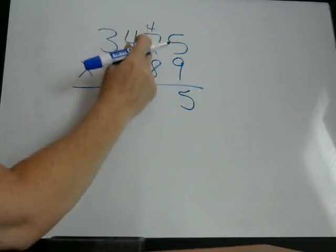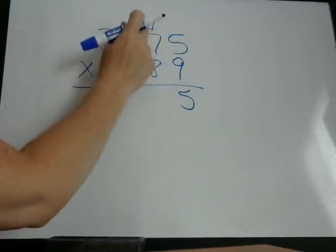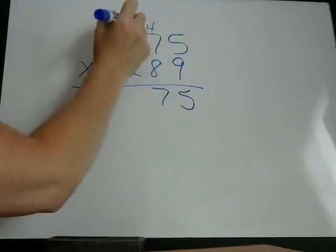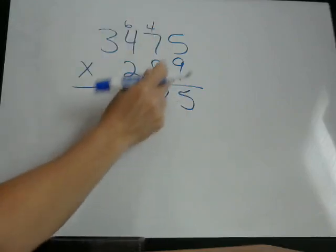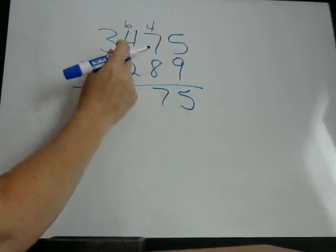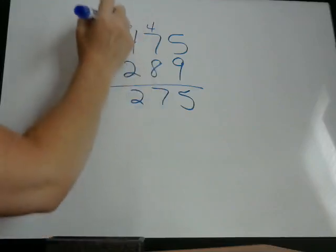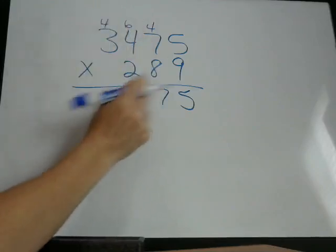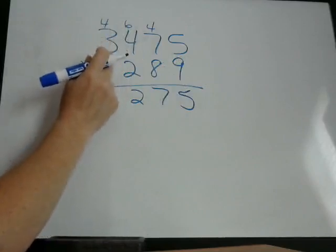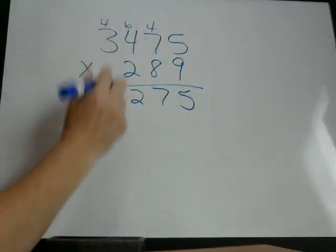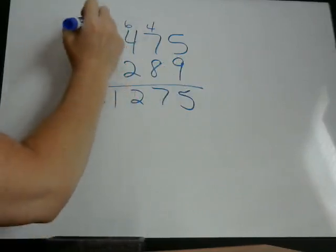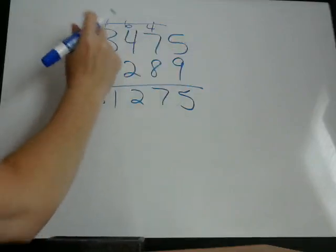9 times 7 is 63, plus 4 is 67. We write that like that. 67. 9 times 4 is 36, plus 6 is 42. We write that like this. 42. 9 times 3 is 27, plus 4 is 31. We've come to the last digit, so we cross those out.